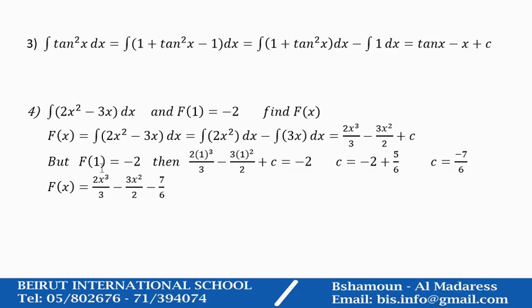But we know that F(1) equals minus 2. You substitute x equals 1 and y equals minus 2, you end up with an equation, you solve for c, and c will be minus 7 over 6. So the original function is F(x) equals 2x cubed over 3 minus 3x squared over 2 minus 7 over 6.